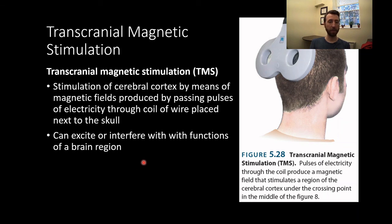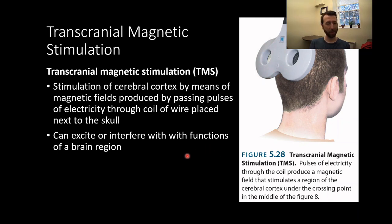Last up, we are talking about transcranial magnetic stimulation, or TMS. This uses a magnet to stimulate superficial brain regions — specifically, stimulation of cerebral cortex using a magnetic field produced by passing pulses of electricity through a coil of wire placed next to the skull. A really powerful magnet can be moved around to excite or interfere with various functions of a brain region. While that sounds dangerous, it's relatively safe. It can stimulate or silence activity of superficial brain regions, and you can find dramatic demonstrations of TMS rendering people unable to make coordinated hand movements by stimulating or inhibiting the motor cortex. It's a pretty exciting newer method.